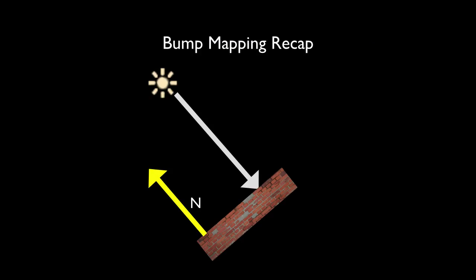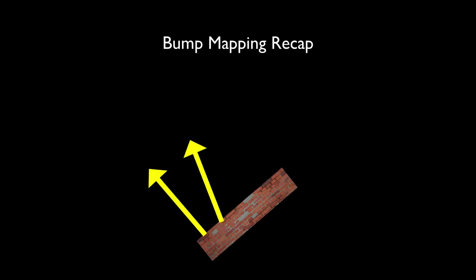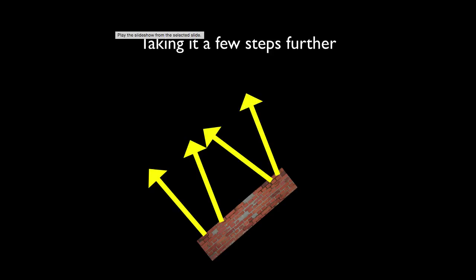Here's a recap of how bump mapping works. Essentially the light strikes the surface, and the surface has a predefined normal vector defined by the topology of the polygon. With bump mapping, we take those normals and retrieve them from a special bump map. Where bump mapping leaves off is the fact that you are only providing a displacement or a change of the normals when you're shading the polygon. The underlying surface topology, which is essentially a flat triangular polygon, remains unchanged.